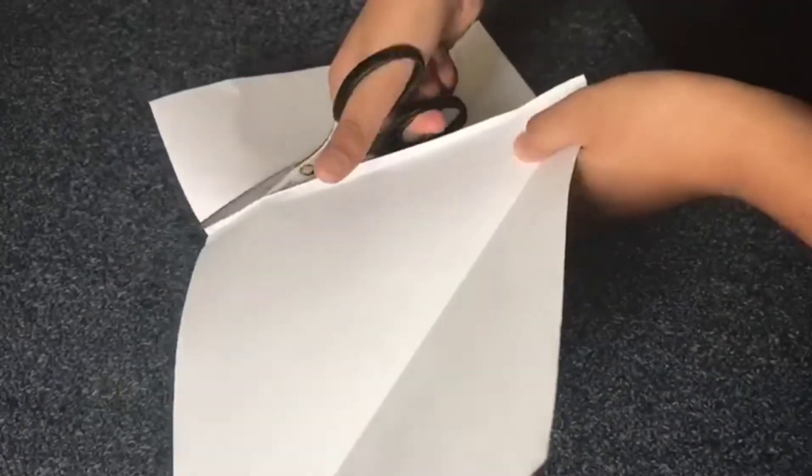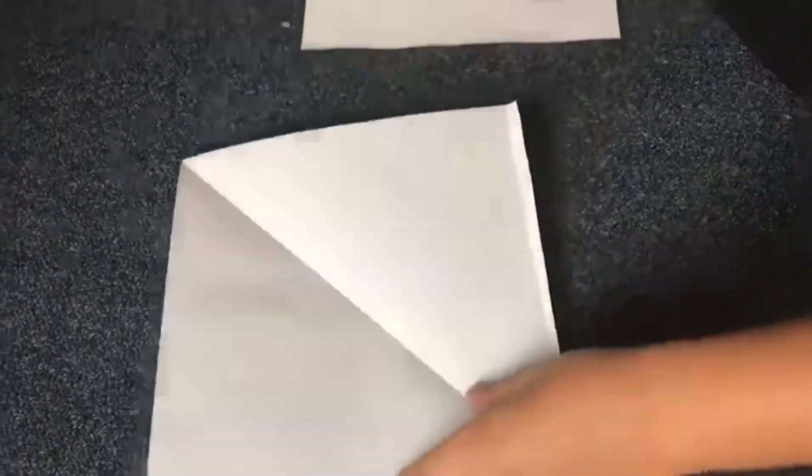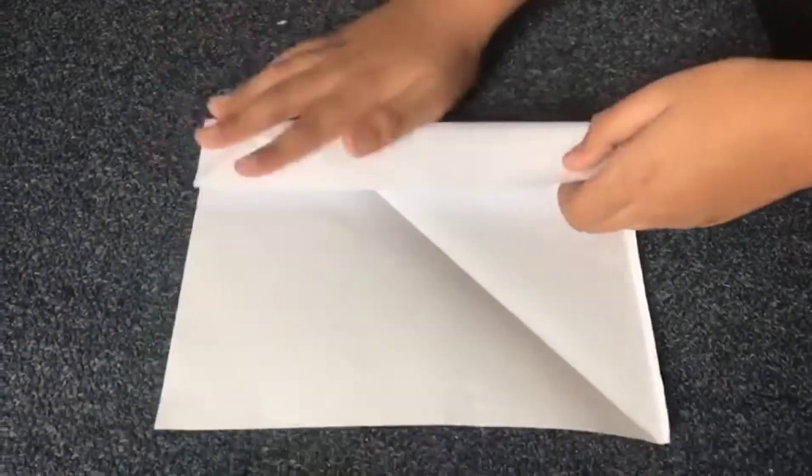My son likes to do a lot of origami. So this is one of the things he always does. So we have a square paper and the rectangle.